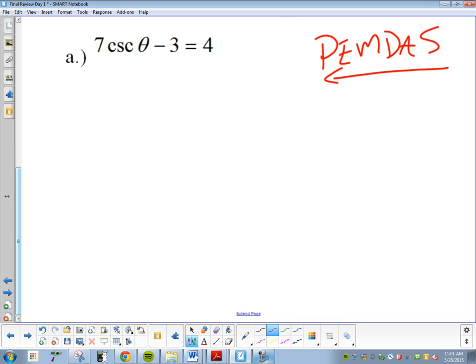I'm trying to solve for theta. I'm trying to get it by itself. So, Aronza, what do you want to do first here? Add the 3. Add or subtract first. So, 7 cosecant theta equals 7. Aronza added or subtracted first. Cool? We did that.